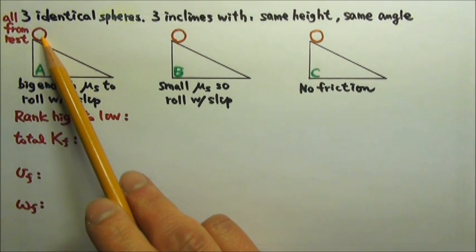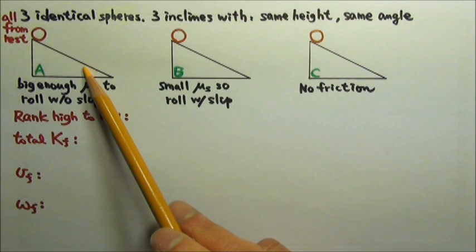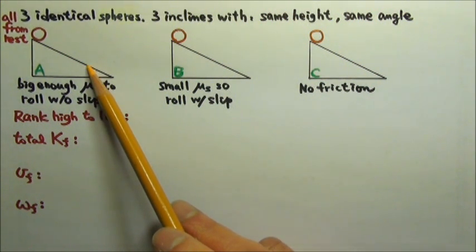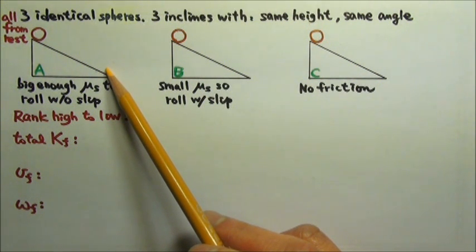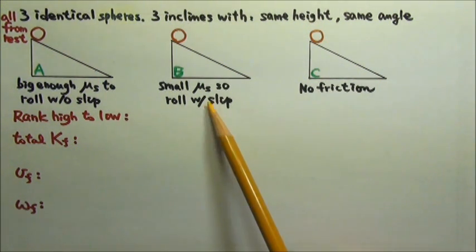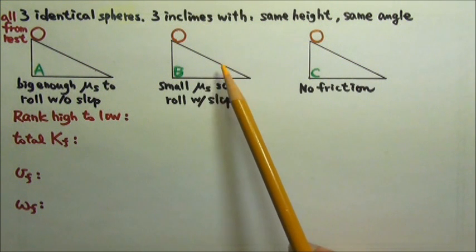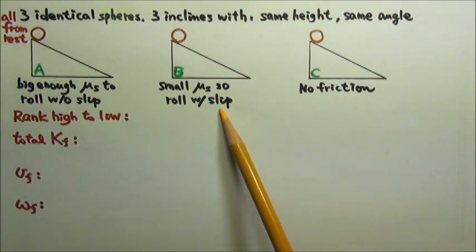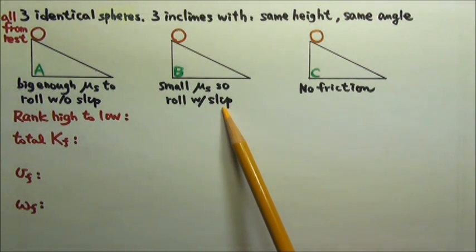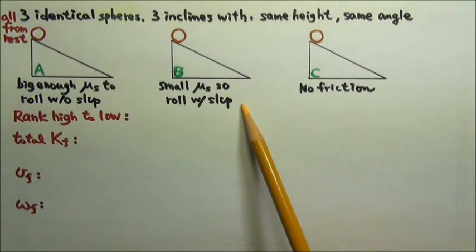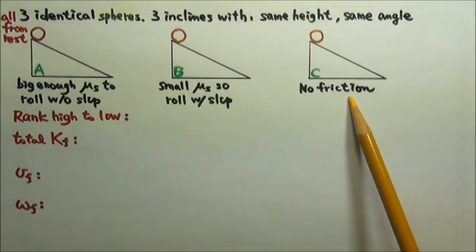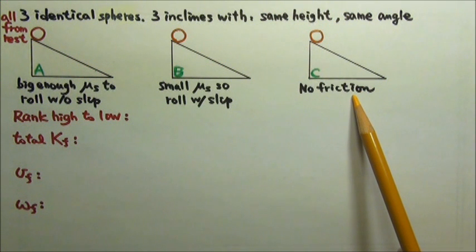When the sphere rolls without slipping, the friction is static friction, and this static friction does not do any work — it does not take any mechanical energy away to turn it into heat. For B, because the sphere is slipping, the friction is kinetic friction, which does work and turns some mechanical energy into heat. If there's no friction, there's no friction to take mechanical energy away to turn it into heat.